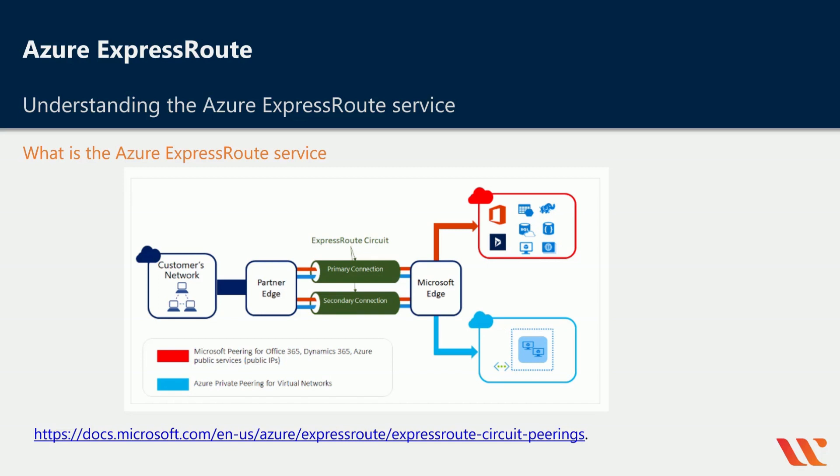You actually have to have the required hardware in place, because all of this is flowing via a private network. It's like having an established connection over a private link from your customer network onto Azure. You have to make use of various partner networks in order to create something known as an ExpressRoute circuit.